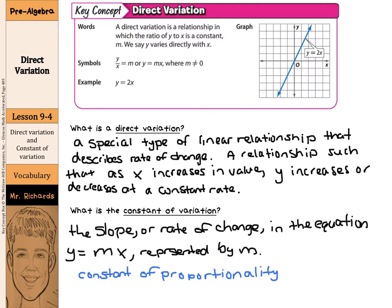So if we pull this together, we have the constant of variation and direct variation, and if we look at our key concept box where it says a direct variation is a relationship in which the ratio of Y to X is constant M, so we have a constant slope. We say Y varies directly with X. You can see the equation Y equals MX. In example, Y equals 2X.